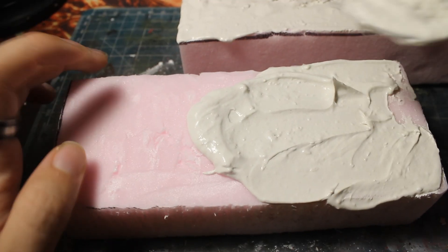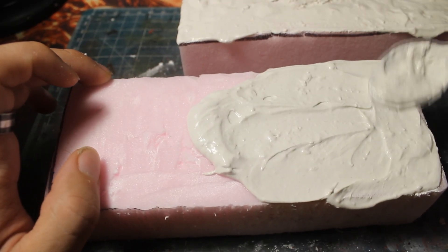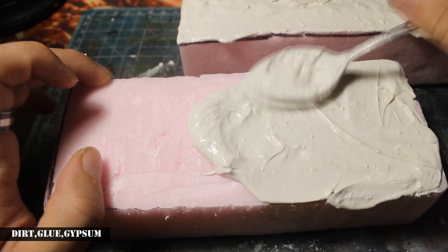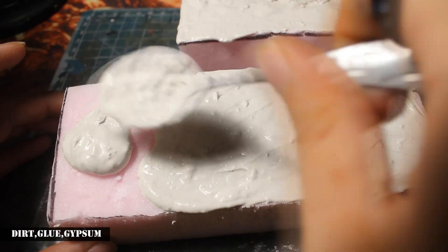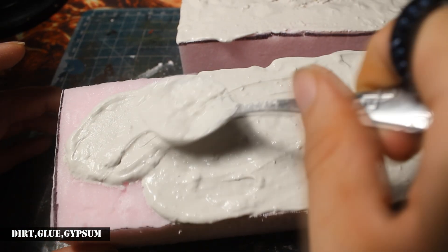For the texture on the houses, I use glue and a large amount of gypsum with some dirt that I use for spreading out the surface.